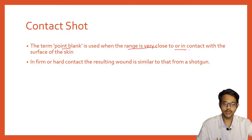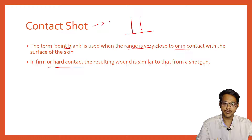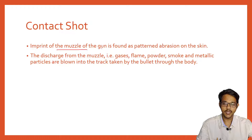For the contact shot, the term 'point blank' is used, which tells that the range is very close to or in contact with the surface of the skin. In this contact shot, the gun barrel is in close contact with the skin, resulting in a wound similar to that of a shotgun. An imprint of the muzzle is found as a pattern of pressure on the skin.